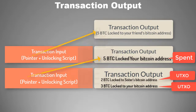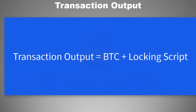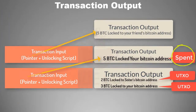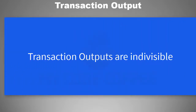So let us revise what we learned. A transaction output is the value of Bitcoin along with a locking script. It is of two types: first, inactive or spent transaction outputs — these are dead because they are already spent. Second, unspent transaction outputs, the real active outputs that someone can spend, often referred to as UTXO. Transaction outputs are also indivisible.